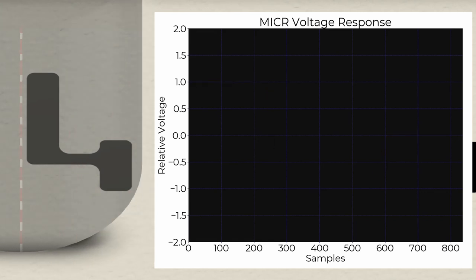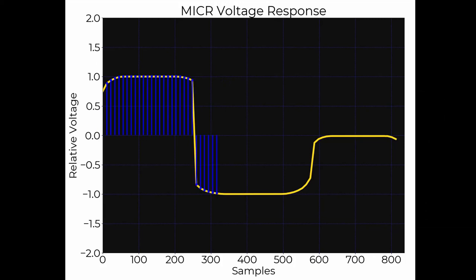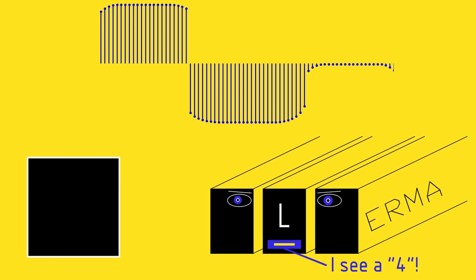The pickup would produce a voltage proportional to the strength of the magnetic field under it at a given time. So as it was run over a number where there was more ink, the field would be stronger and the voltage higher. Where there was less ink, the voltage would be lower. The resulting waveform could then be sampled, converted into a string of binary, and further analyzed to decode what the original account number was.